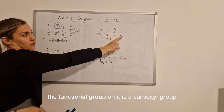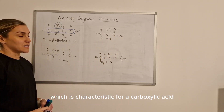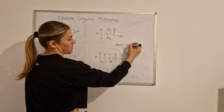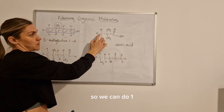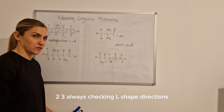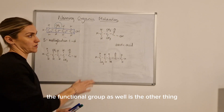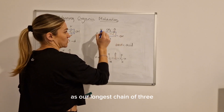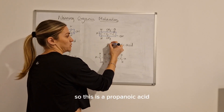This next molecule has a carboxyl group on it, which is characteristic of a carboxylic acid, meaning the name ending would be -anoic acid. Now we just need to work out the prefix for the longest chain of carbons — checking in L-shape directions: one, two, three. The longest chain of carbons has to include the functional group, so it has to contain this carboxyl group. Picking the middle chain of three, the prefix for three carbons is 'prop', so this is a propanoic acid.